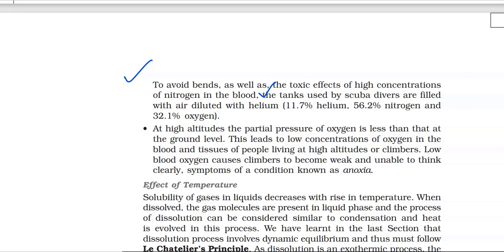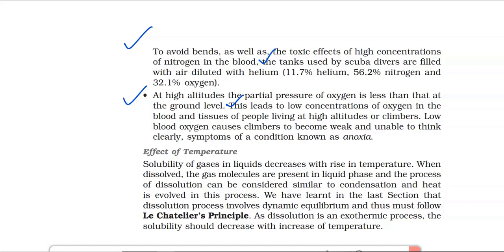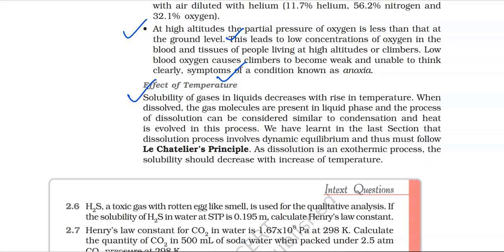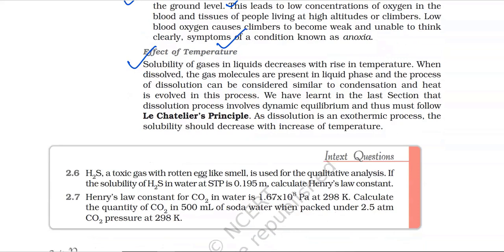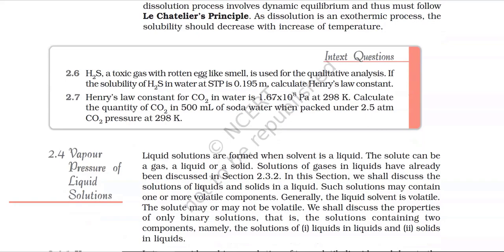At high altitudes, the partial pressure of oxygen is less than at ground level. This leads to low concentrations of oxygen in the blood and tissues of people living at high altitudes or climbers. Low blood oxygen causes climbers to become weak and unable to think clearly — symptoms of a condition known as nausea. Effect of Temperature: Solubility of gases in liquids decreases with rise in temperature. Since dissolution of gas is similar to condensation, heat is evolved. As dissolution is an exothermic process following Le Chatelier's principle, solubility decreases with increase of temperature.